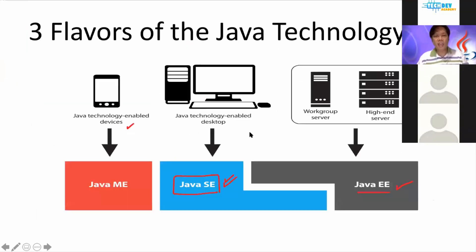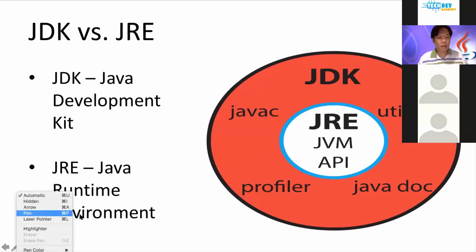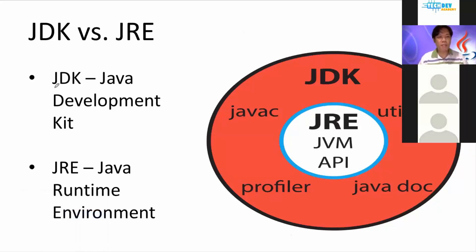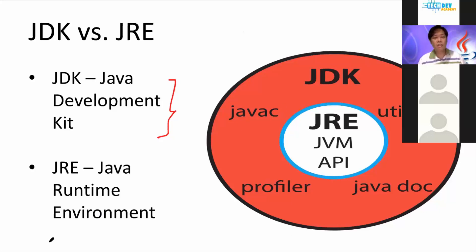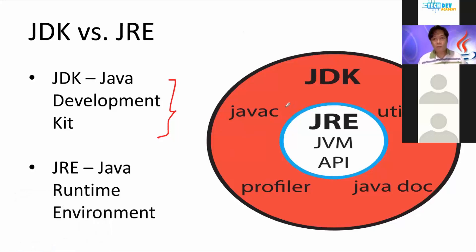JDK stands for Java Development Kit. This is the installer you need to use if you want to install an application that can compile your code and create code. If you're a developer or a student, you'll need the Java Development Kit installed on your machine.